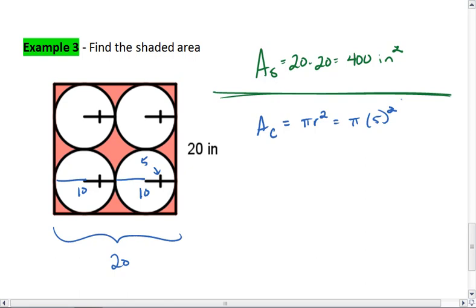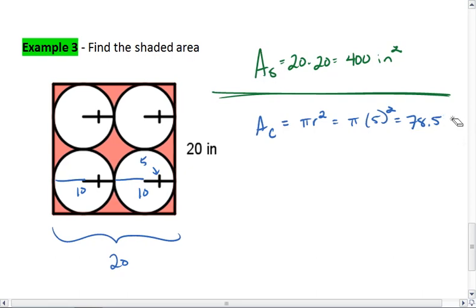We take 25 times pi, and we get about 78.53 inches squared.